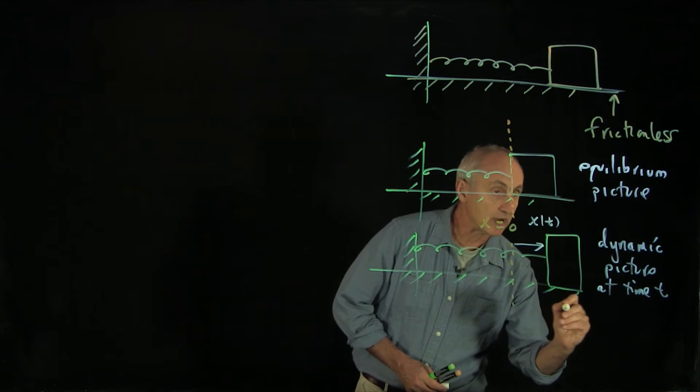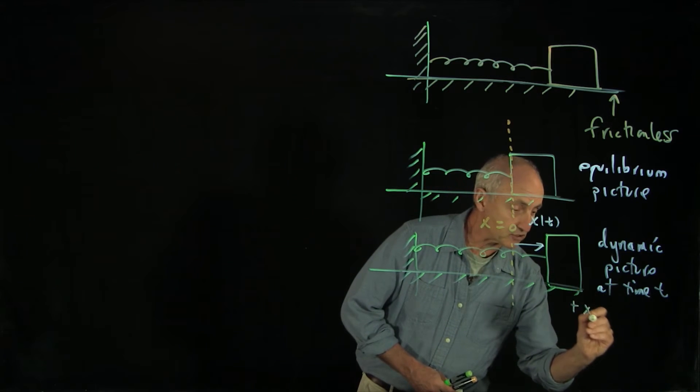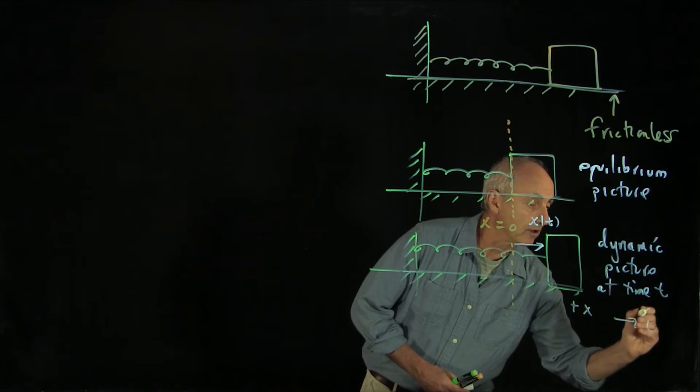As far as directions go, we'll have an axis, and this is our plus x direction. Usually we indicate that with a unit vector i hat.